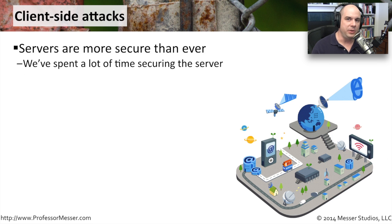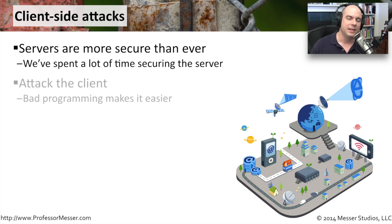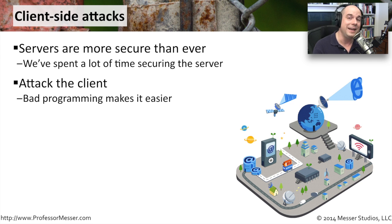The bad guys have noticed that we're putting up firewalls and hardening our servers, making it very, very difficult for people to go directly to the source. If a bad guy wants to get to a database, it's very hard now to go to that database server — we put all kinds of security methods in place to prevent direct access. So the bad guys have decided: if you're going to protect the server, let's attack the client, because the client is not going to be protected from the server.